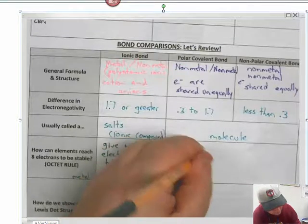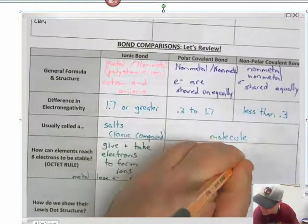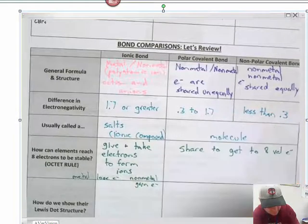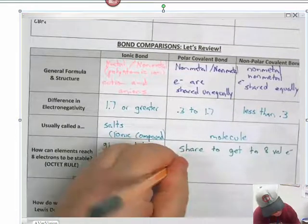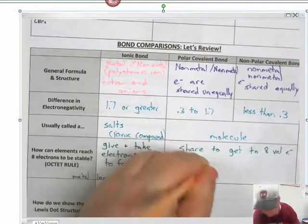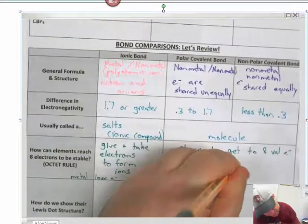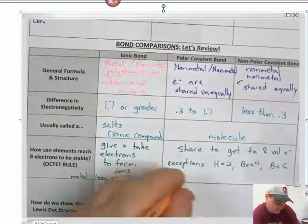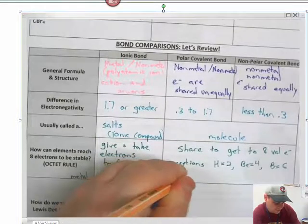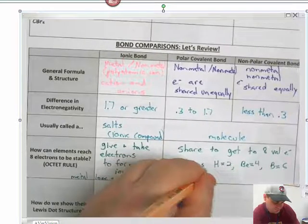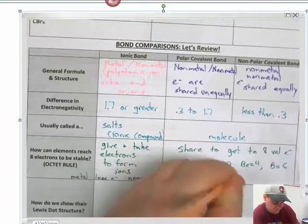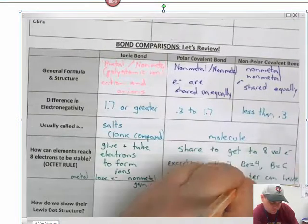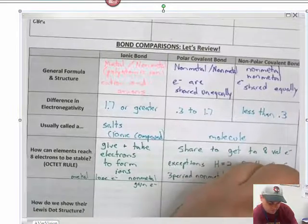Remember, in covalent bonding, we share to get to 8 valence electrons. In covalent bonding, remember, there are exceptions. Remember, hydrogen likes 2. Beryllium likes 4. And boron likes 6. And remember, third period non-metals in center can have more than 8 valence electrons.